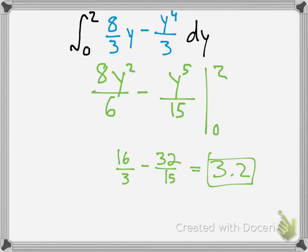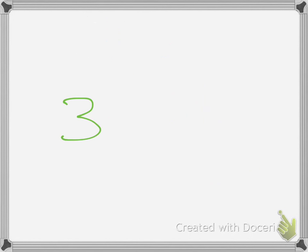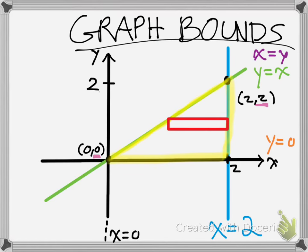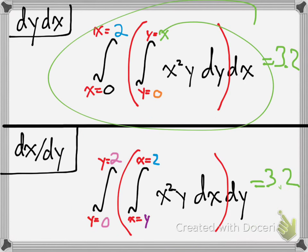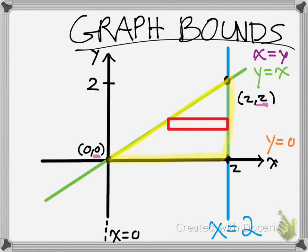3.2 equals 3.2 — just like the dy dx method. So there are two different ways of evaluating the same double integral, and both give the same answer. It's your choice: whichever way you like doing it, do it that way, and just keep practicing. I'd suggest practicing both ways, because sometimes you won't be able to evaluate the integral using your preferred method — that's why knowing both is important. Thanks.